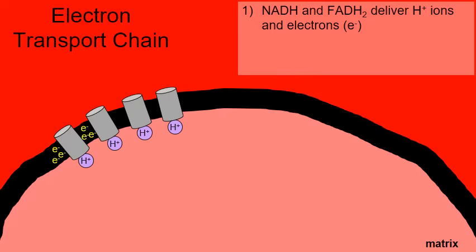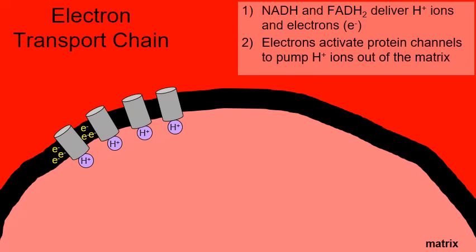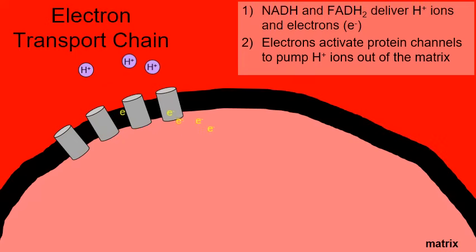This is why it's called the electron transport chain: the electrons start a chain reaction where hydrogens are transported out of the matrix. As electrons transfer from protein channel to protein channel, they provide energy to pull these hydrogens out of the matrix, setting up the next step of the electron transport chain.